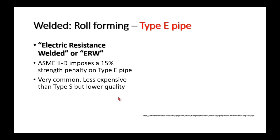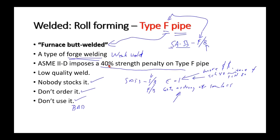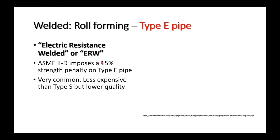ERW — electric resistance welded pipe — is in the middle: instead of a 40% strength penalty like furnace butt weld, it gets a 15% strength penalty. It's less expensive than Type S seamless, lower quality, but very common.